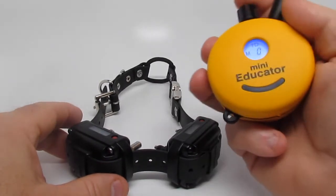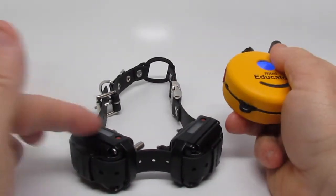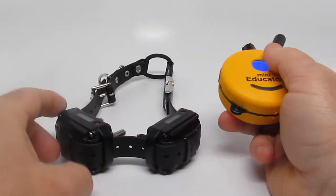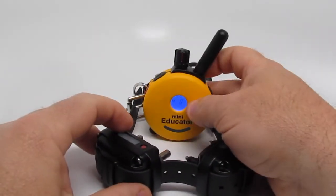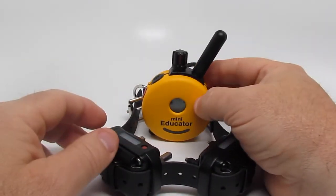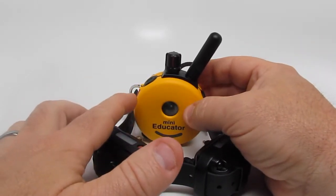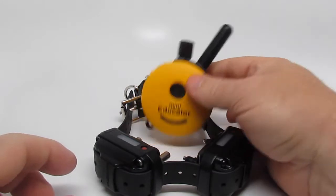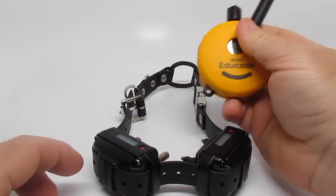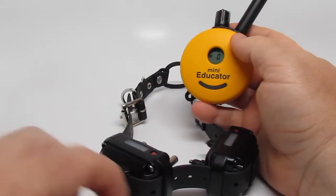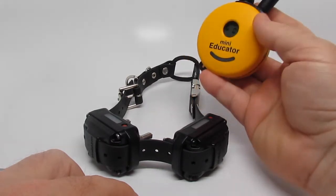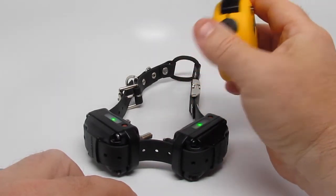So there you have it. How to add a receiver. How to make a plus collar. And, it's that simple. That's the beauty of the Mini Educator. And actually you can do this to all the e-collar technology models. You can make your own plus systems. It's fairly simple and works really well.